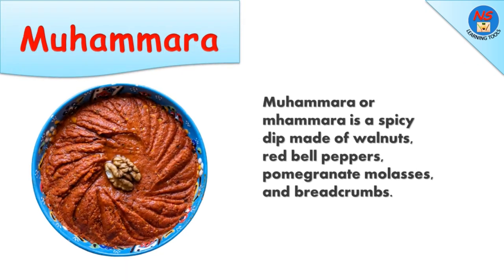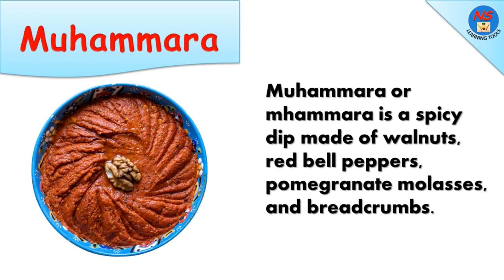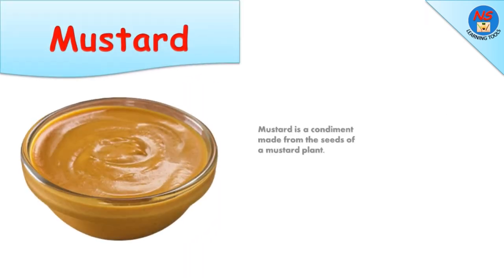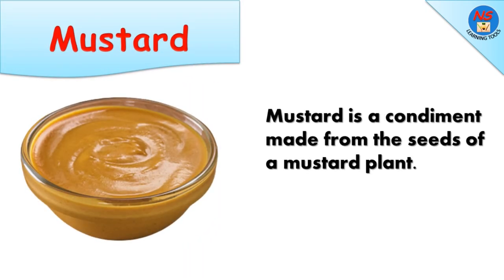Muhammara is a spicy dip made of walnuts, red bell peppers, pomegranate molasses, and breadcrumbs. Mustard is a condiment made from the seeds of a mustard plant.